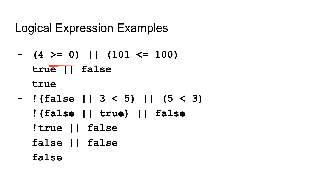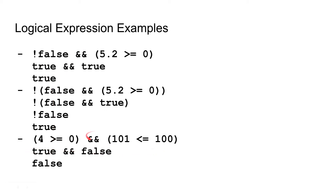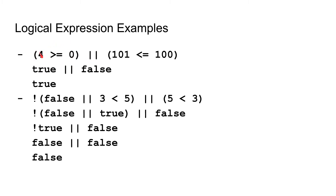Next, we have the same example but using the or operator instead of and. We have the first set of parentheses: 4 is greater than or equal to zero, and we or that with another set of parentheses: 101 is less than or equal to 100. Again, 4 is greater than or equal to zero gives us true, and 101 is less than or equal to 100 gives us false. True or false, from our truth table, is true.